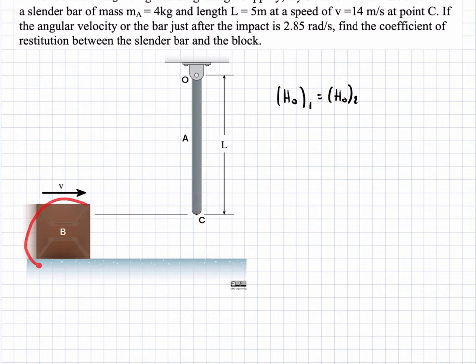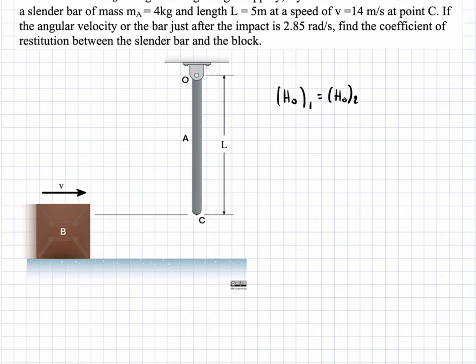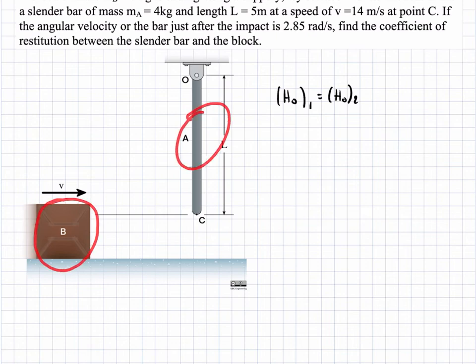At state one, the block has a velocity and the slender bar is stationary with no rotation. At state two, right after the impact, both the block and the bar have velocities. The impact is characterized by the coefficient of restitution e, which is what we're tasked to find.